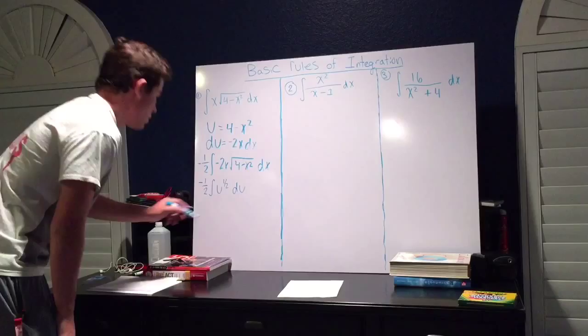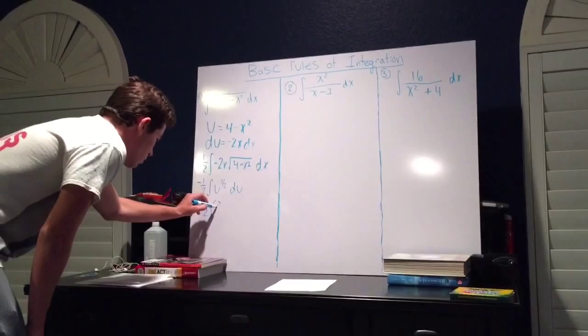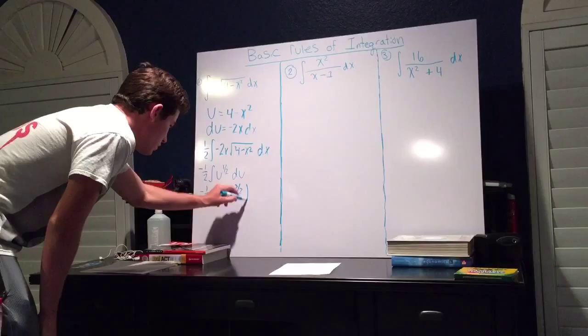Now we can integrate the inside using our normal integration method, and we'll get negative 1 half times 2 thirds u to the 3 halves, close parentheses, and plus c.